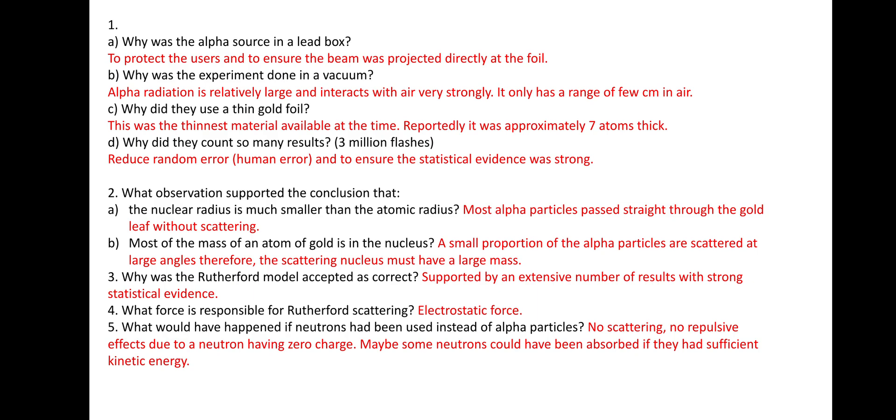Number five, what would have happened if neutrons had been used instead of alpha particles? Well, there would have been no scattering, no repulsive effects due to a neutron having zero charge compared to the alpha particles, charge of plus two, or relative charge of plus two, or 3.2 times 10 to the minus 19 coulombs. Maybe some neutrons would have been absorbed if they had sufficient kinetic energy.